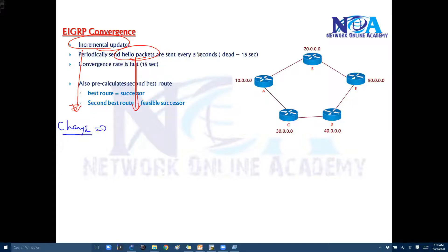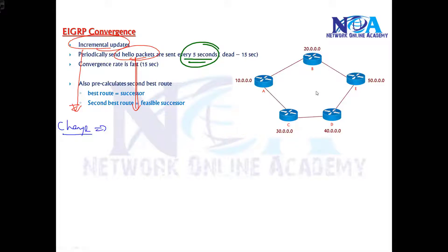So the neighbors will exchange the updates only whenever there is a change. But periodically they will be sending the hellos for every 5 seconds. So which means the router A will be sending an update or hello to router B for every 5 seconds. And the router B will be sending a hello for his neighbors like in my case to A as well as E for every 5 seconds.